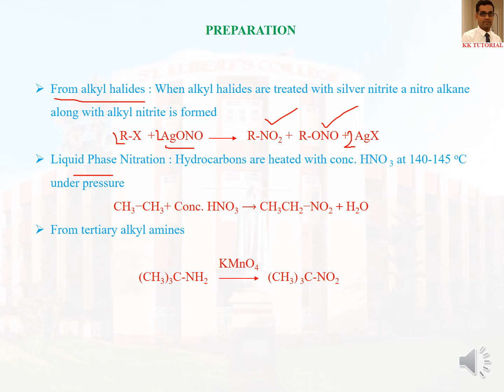The third method is from tertiary alkyl amines. Tertiary alkyl amines on oxidation with KMnO4 give the tertiary alkyl nitro compound. In this reaction the amine must be primary — the amine group is NH2 — but the alkyl part is tertiary. So from tertiary alkyl amines we can oxidize to form a tertiary alkyl nitro compound.